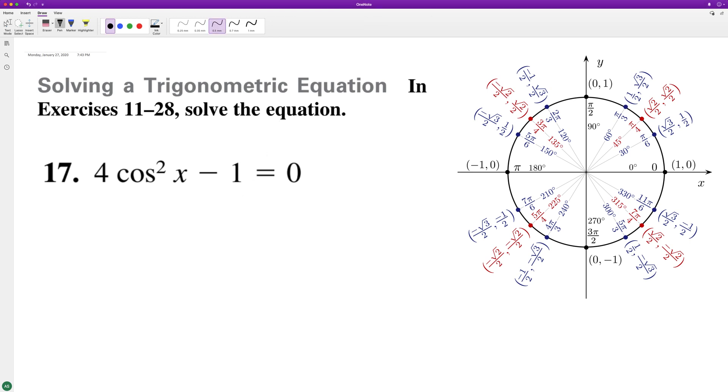following equation for x. So first thing we'll do is move one over to the right side, then we'll have four cosine squared x equals one. Divide by four, and then we'll have cosine squared x equals one fourth.